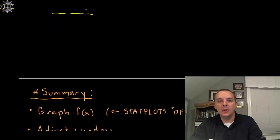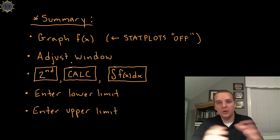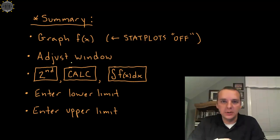So just in summary, here's the list of steps. Alright, step one is to graph your function and make sure your stat plots are off. Adjust your window, the x and y axis, so you make sure you can see everything on the function. And then we'll go second calc and then that integral option and pop in your lower limit of integration, your upper limit of integration.